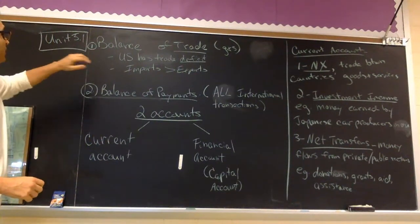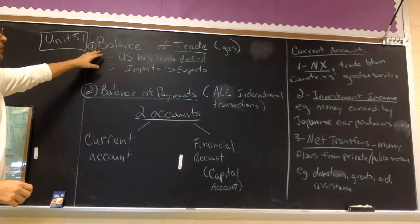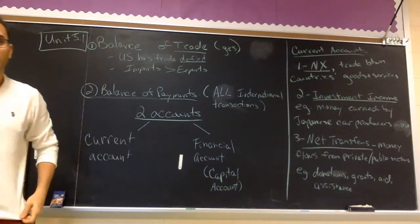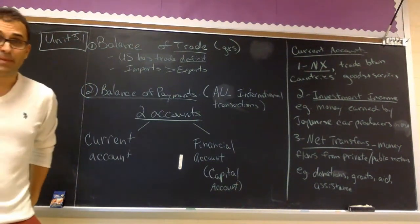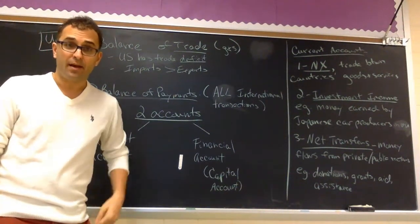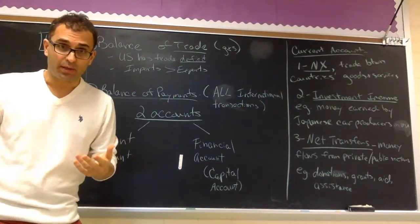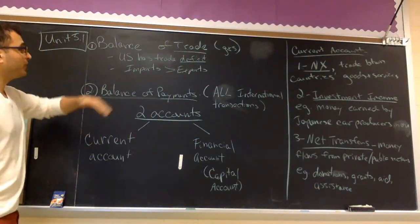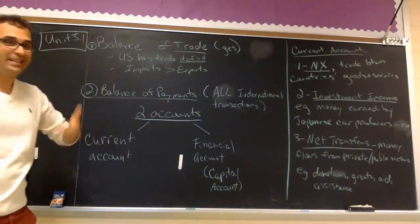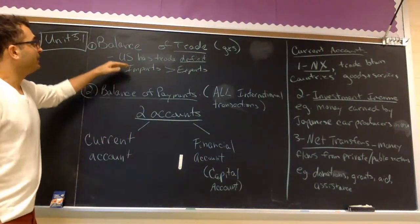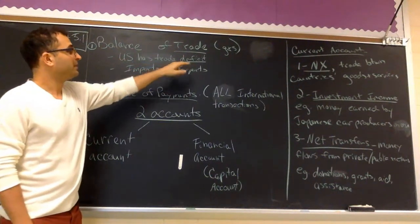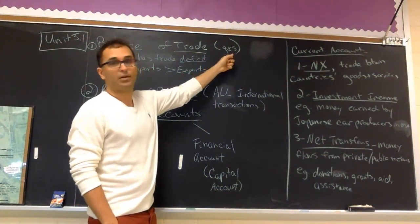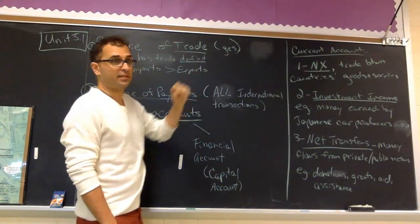The first thing in Unit 5 is called the balance of trade. We've done this before when we talked about aggregate demand and the components of aggregate demand — the last one being net exports. So the balance of trade essentially is that. We're talking about the trade between countries, goods and services.